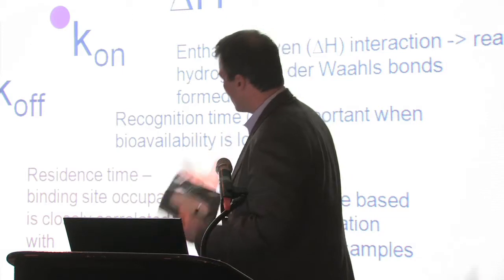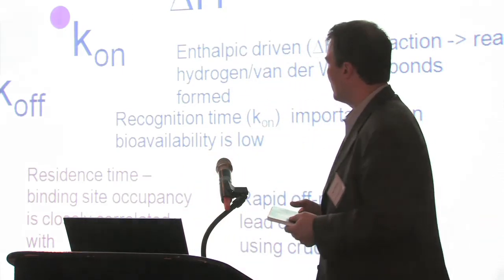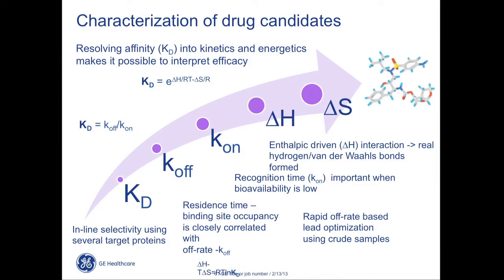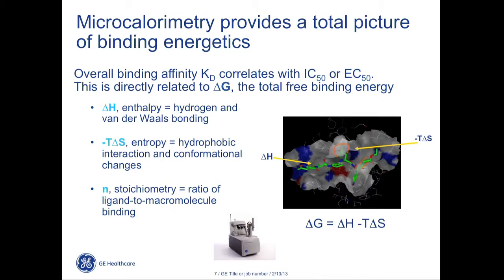Both ITC and SPR will give you affinity, but ITC does it in a very different way and also provides information about the mechanism of action for a particular interaction. ITC is a solution-based experiment requiring much less assay development than SPR. By titrating in your second binding partner in solution, you obtain enthalpy — directly correlated to hydrogen bonding and van der Waals interactions — as well as entropy, which reflects hydrophobic interaction contributions. You also get a direct measurement of binding stoichiometry, which can indicate how much of your sample is active.